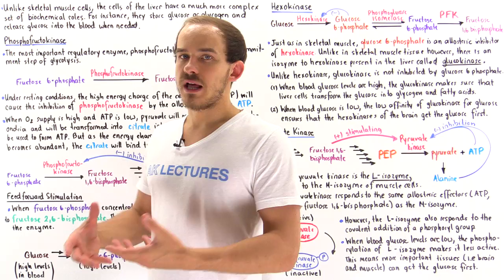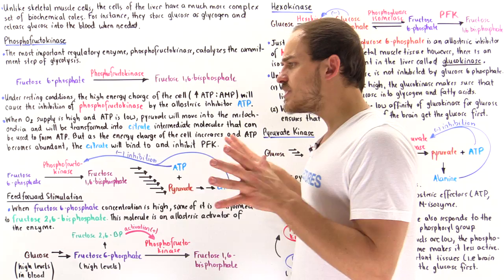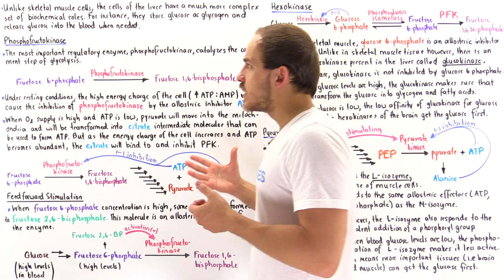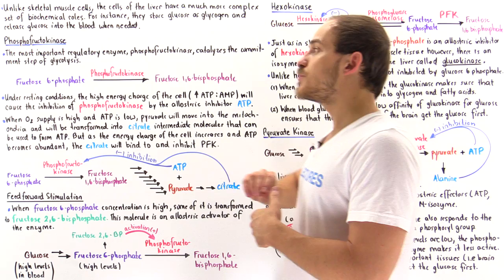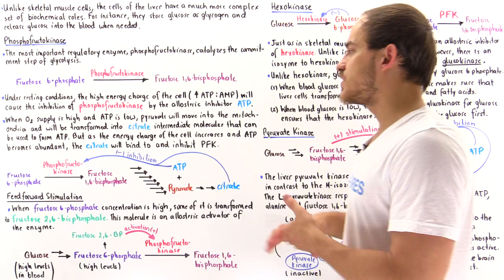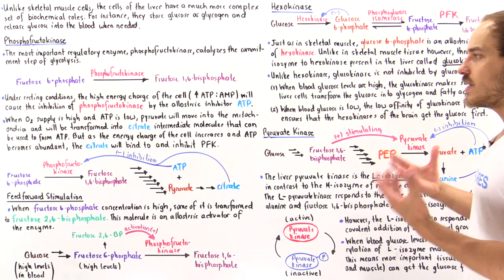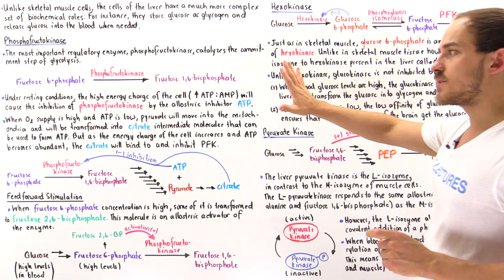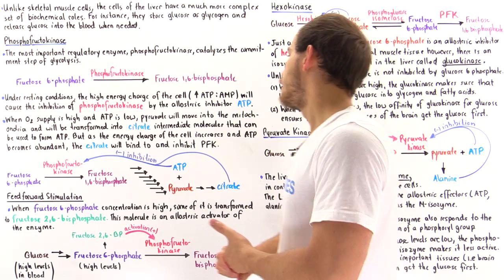The liver also uses the glycolysis process to synthesize building blocks like fatty acids and amino acids. So liver cells have many different types of functions, and as a result it's no surprise that the way liver cells regulate glycolysis is more complex than the way skeletal muscle cells regulate it. In our discussion, we'll focus on how liver cells regulate glycolysis, and although we'll see many similarities with skeletal muscle cells, liver cells use a slightly more complex regulatory pathway.